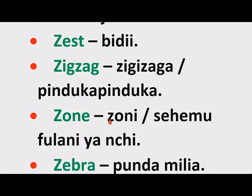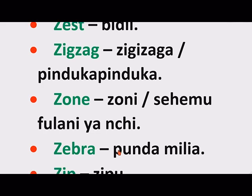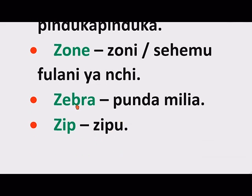Zone — Zoni, or Sehemu Fulani Ya Nchi. Zebra — Pundamilia.